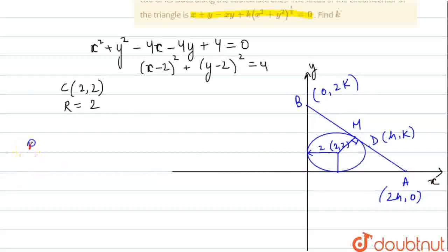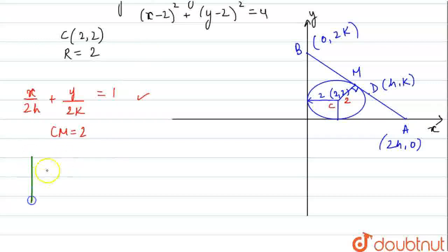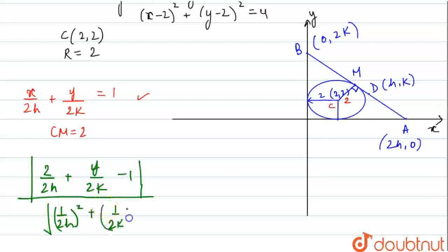This is the centre and CM will be the radius. So CM equals 2 units. Now, the distance of point C (2, 2) to the line AB having equation this is given as: mod of (2/(2H) plus 2/(2K) minus 1) upon the root of (1/(2H))^2 plus (1/(2K))^2. This equals CM which is equals to 2.